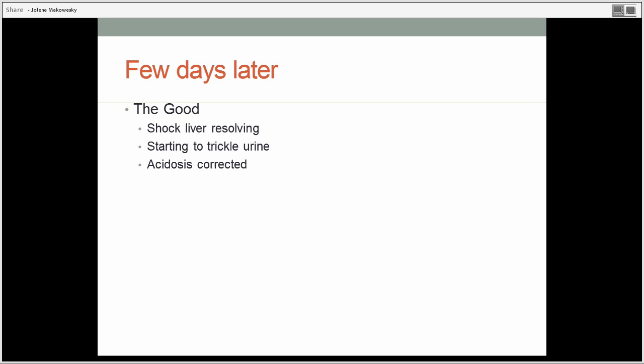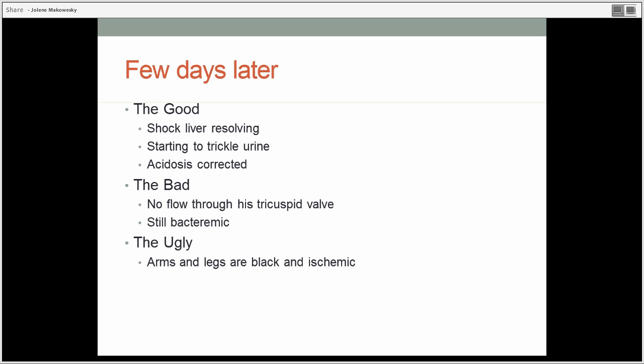A few days later, the good news: shock liver is resolving, he's starting to trickle urine, acidosis corrected. We're all excited about that. Too bad, his tricuspid valve is now clotted. So, there is no flow to his tricuspid valve. So, he is not moving any blood through his heart. And he's still bacteremic. Still MSSA. And it gets worse. His arms or legs are black and ischemic. And we'll need bilateral forearm amputations, as well as BKA and AKA.